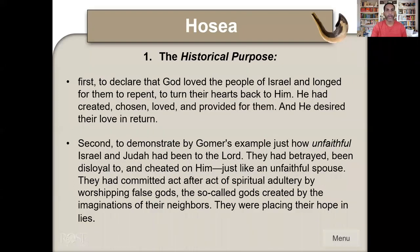The historical purpose: first, to declare that God loved the people of Israel and longed for them to repent and turn their hearts back to him. He had created, chosen, loved, and provided for them, and desired their love in return. Second, to demonstrate by Gomer's example — that's Hosea's wife — just how unfaithful Israel and Judah have been to the Lord. They have committed act after act of spiritual adultery by worshiping false gods, the so-called gods created by the imaginations of their neighbors, placing their hope in lies.